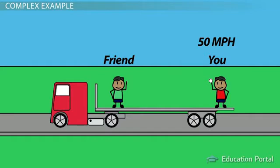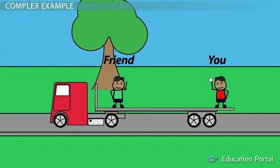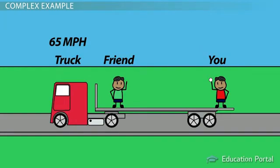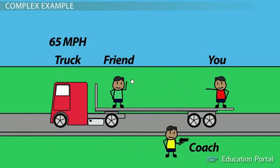You threw the ball with a velocity of 50 miles per hour relative to the truck, and your friend threw the ball with a velocity of 40 miles per hour relative to the truck. Now let's consider what happens if the coach clocks the ball velocity from the roadside. Remember the truck along with everything on it is traveling forward with a velocity of 65 miles per hour.